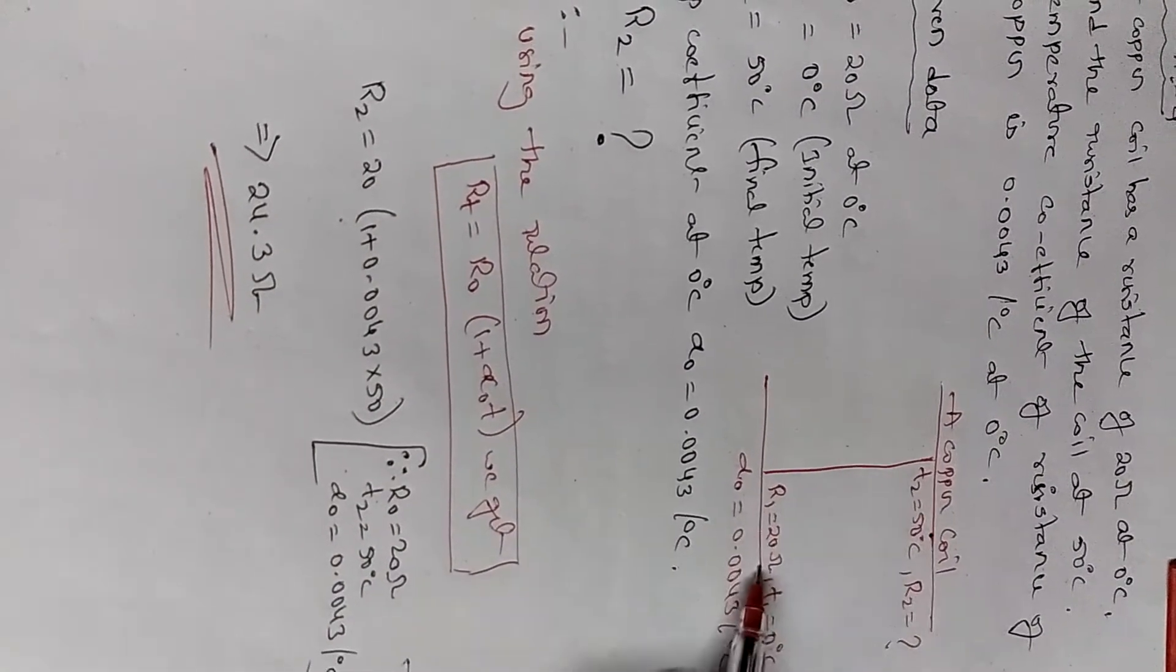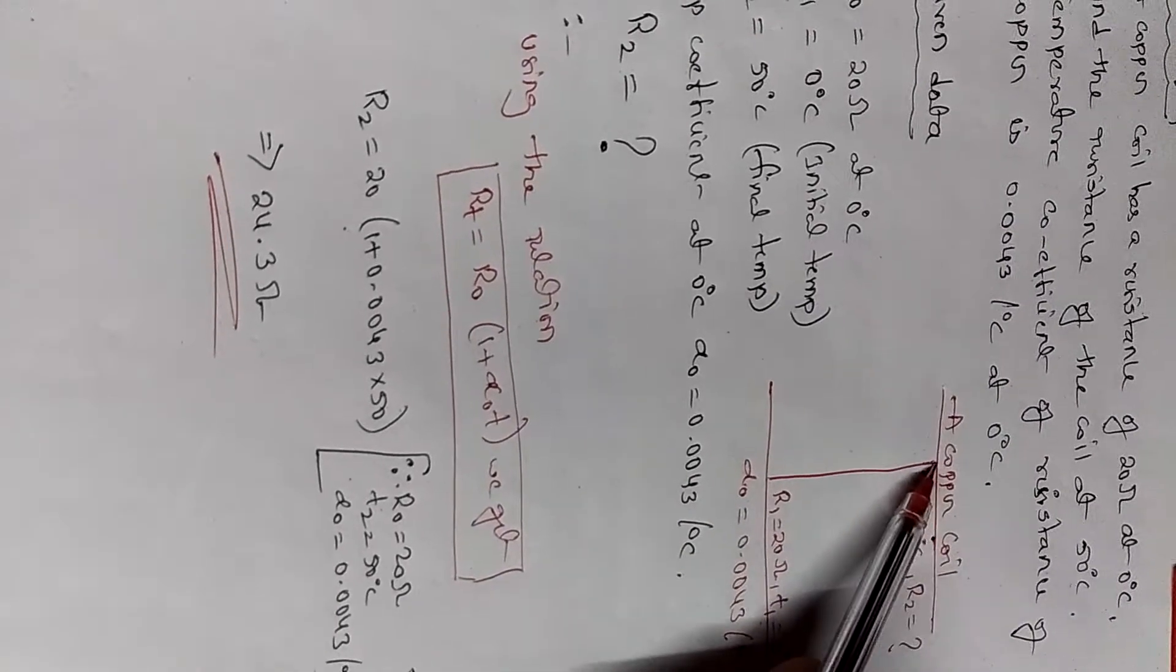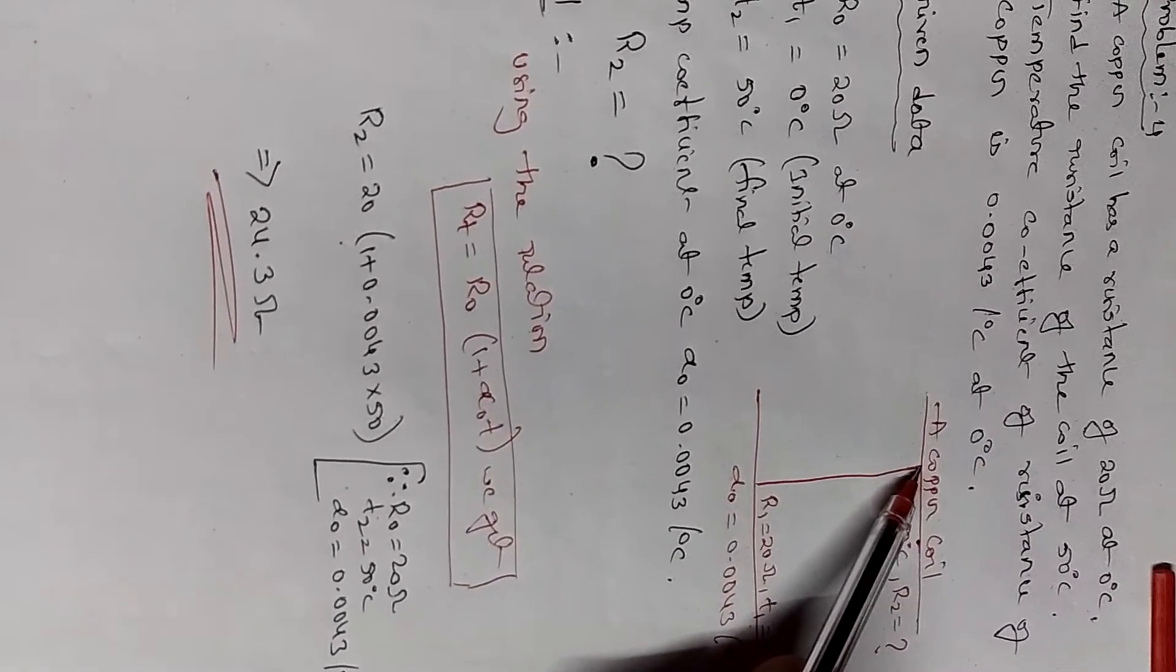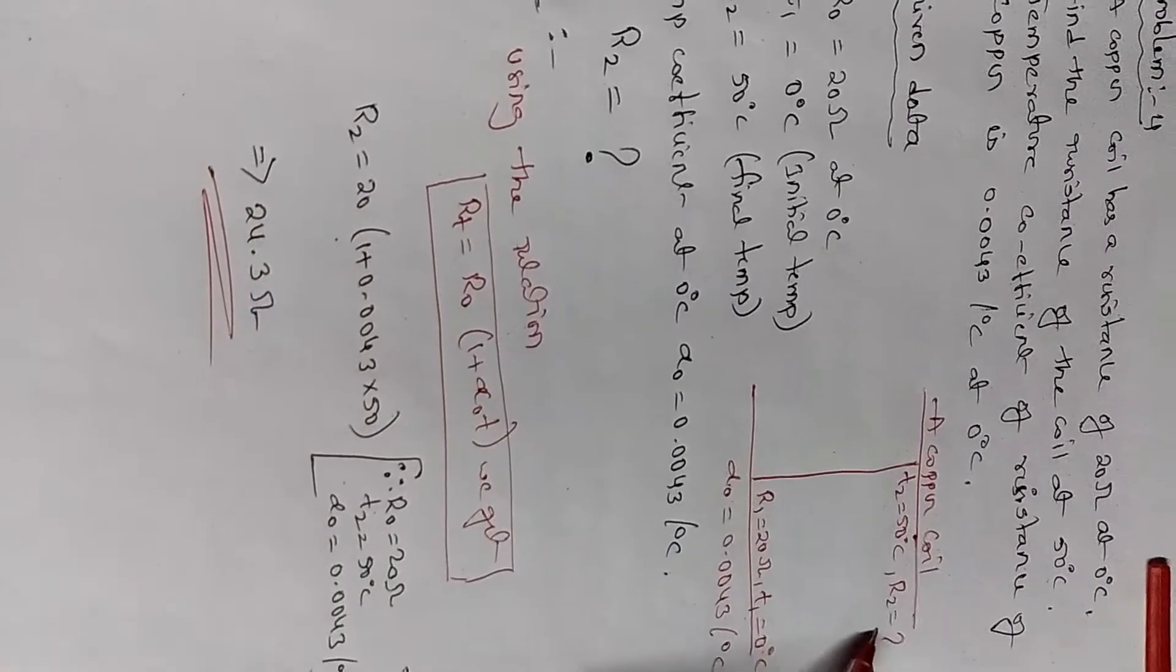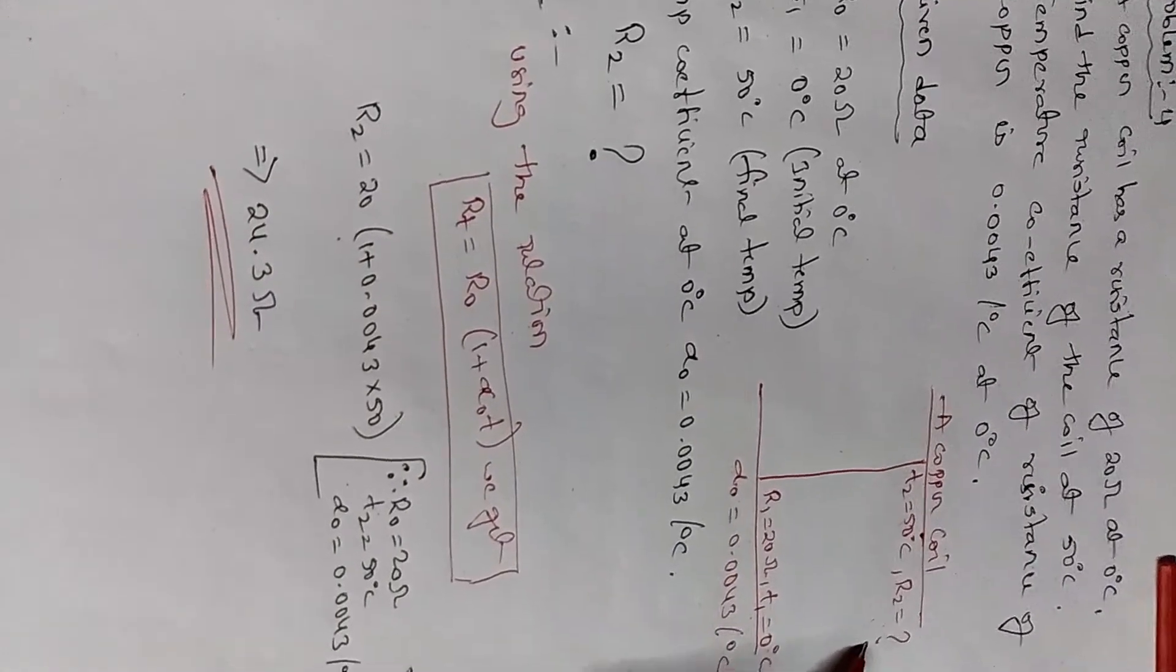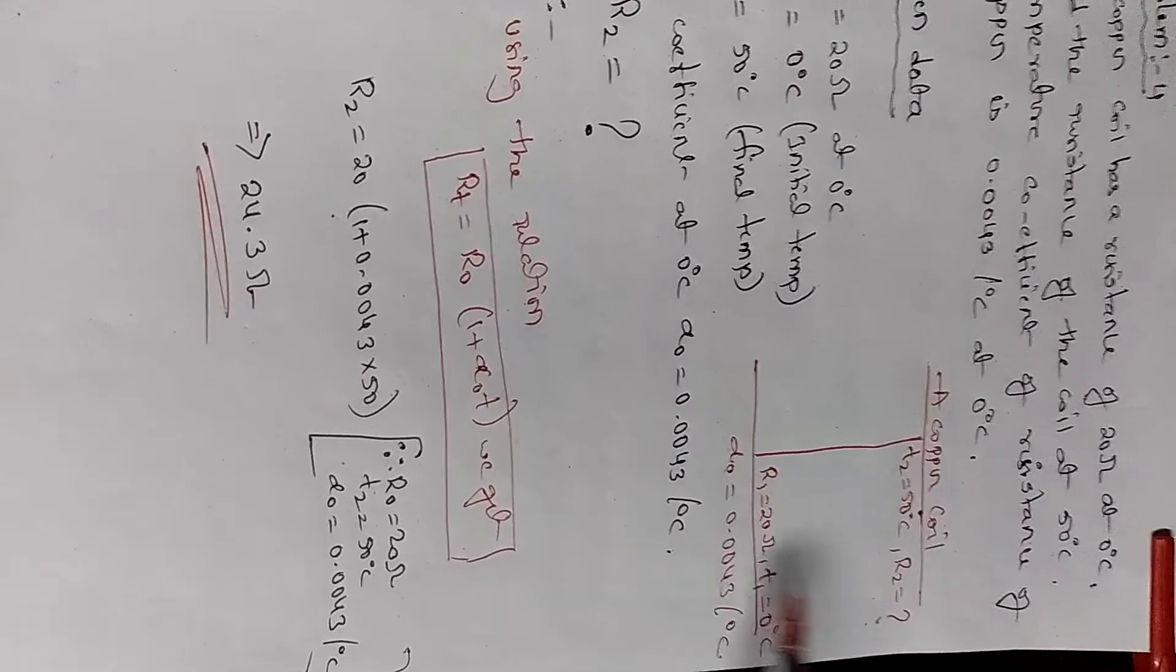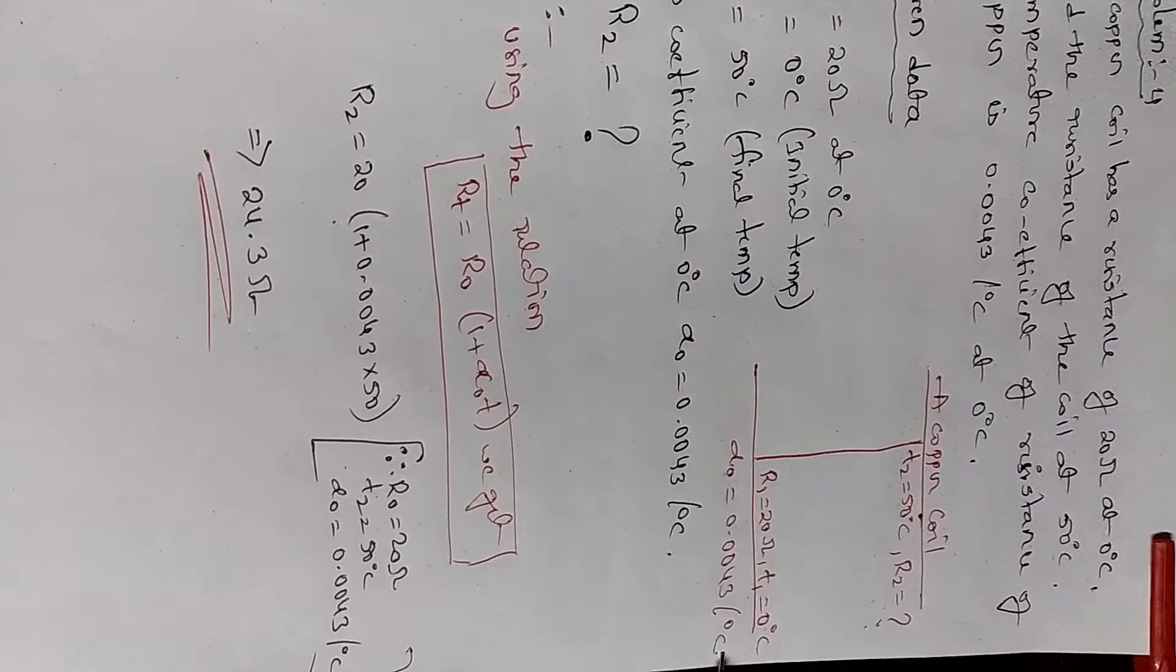The resistance R1 is 20 ohms. Here, the final temperature T2 is 50 degrees centigrade, and it asks us to find resistance R2. The alpha naught value is given as 0.0043 per degree centigrade.